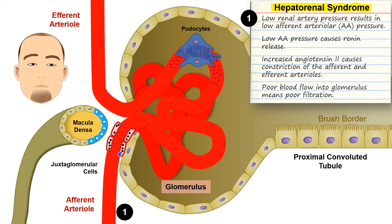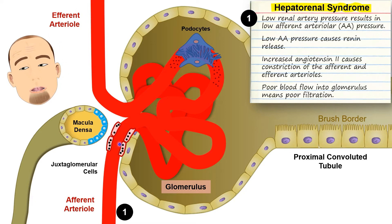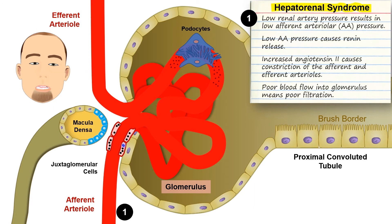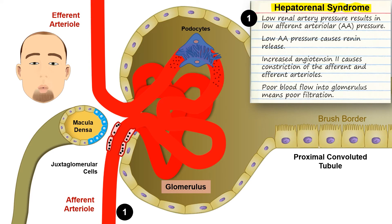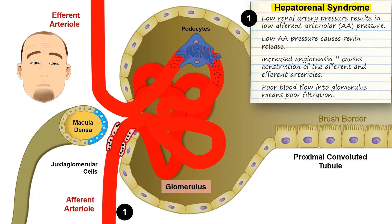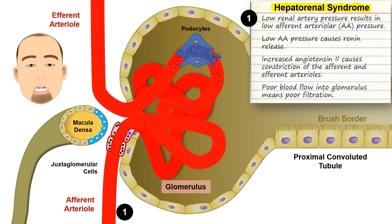That low pressure triggers special cells called renal juxtaglomerular cells — also called granular juxtaglomerular cells — which are embedded in the wall of the afferent arteriole. These cells contain the enzyme renin. Renin is released based on several triggers, but the key one here is the stretch receptor trigger: if pressure is too low, it reduces stretch in the arteriole wall and triggers these cells to release renin.